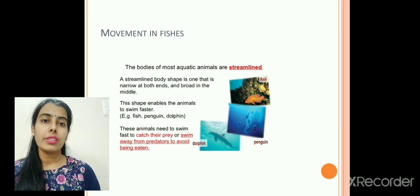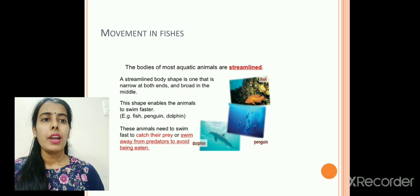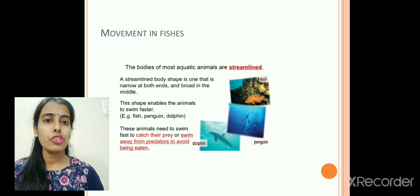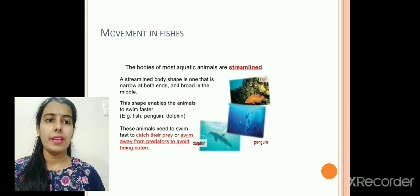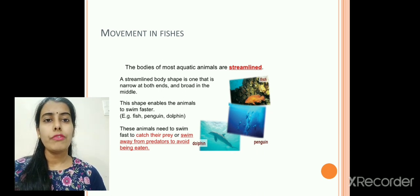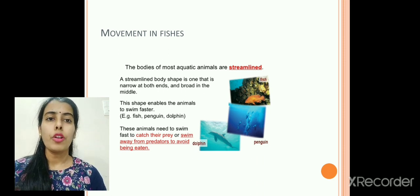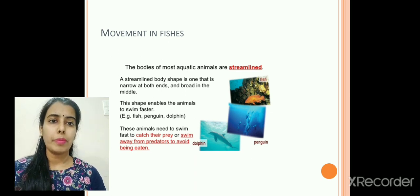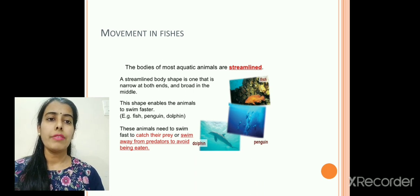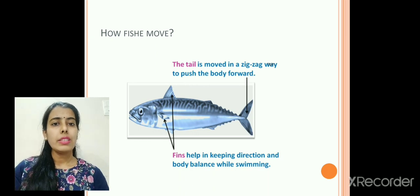Coming to fishes — how do fishes swim? Fishes and most other aquatic animals have a streamlined body shape, which is narrow at both ends and broad in the middle. This shape enables the animals to swim faster because it helps in reducing the resistance from the water, so they can easily cut through the water. These animals need to swim very fast to catch their prey or to escape from their predators.